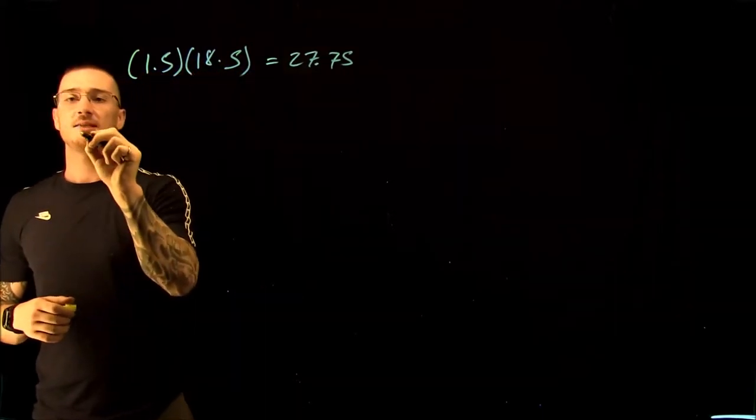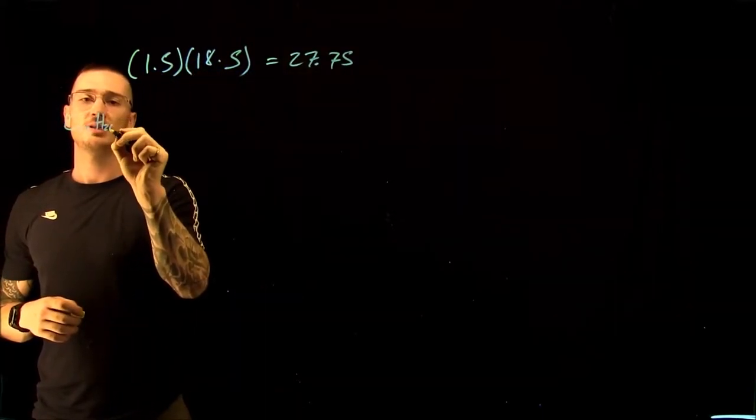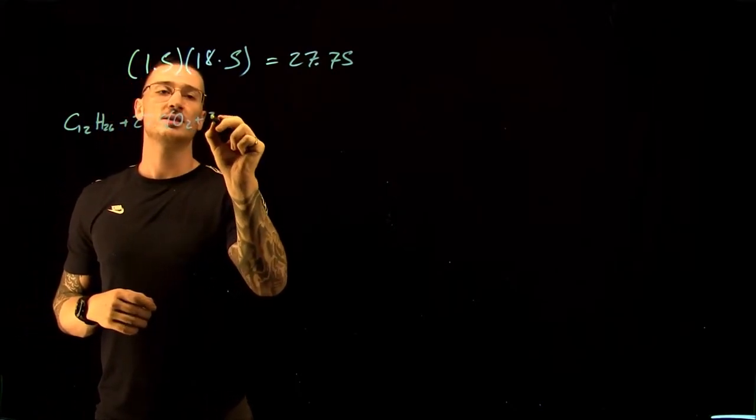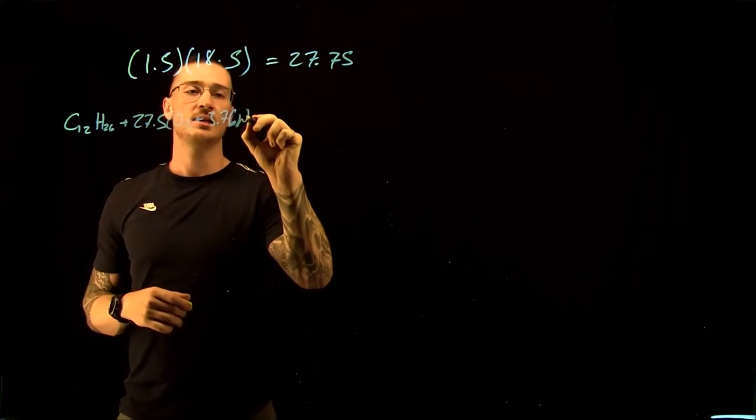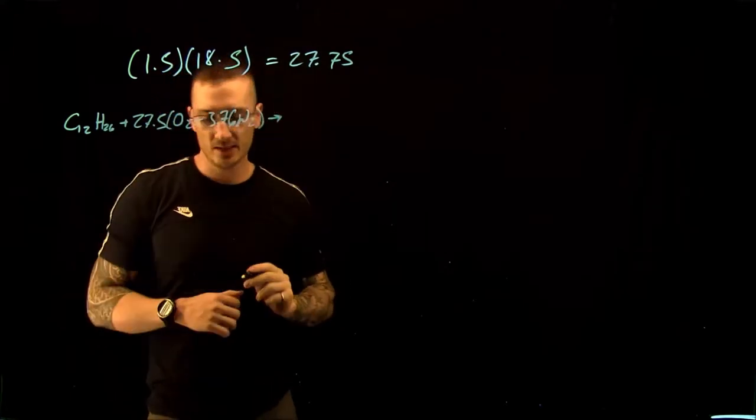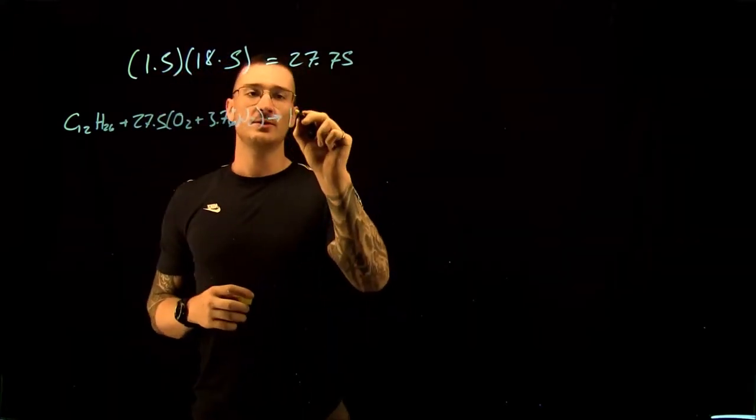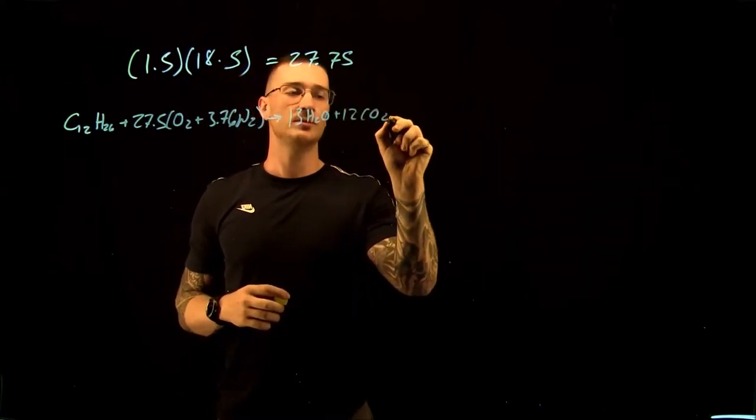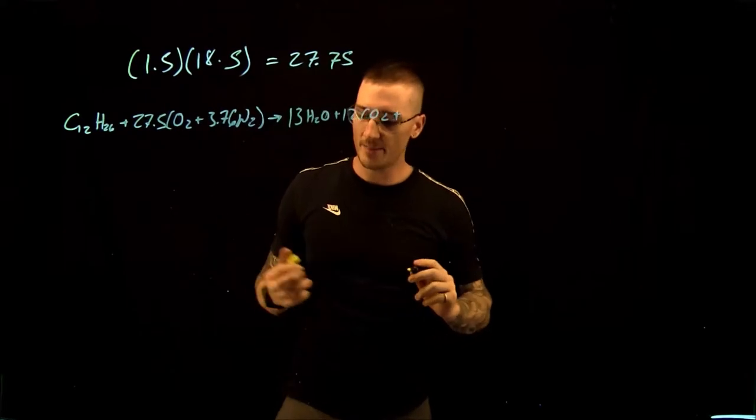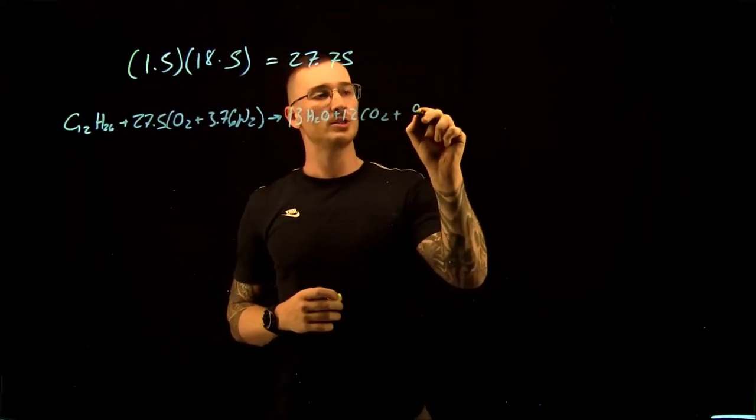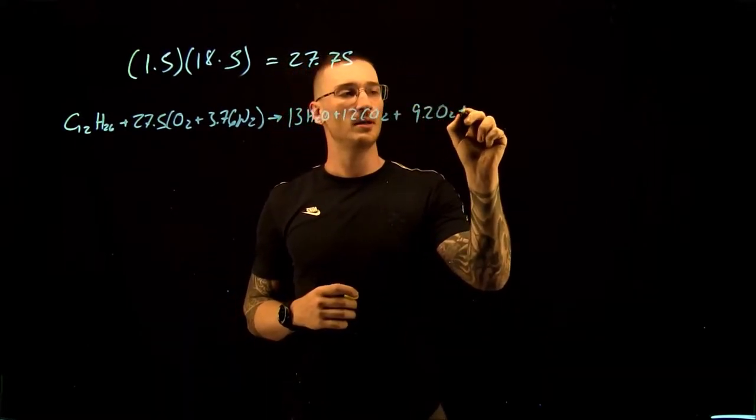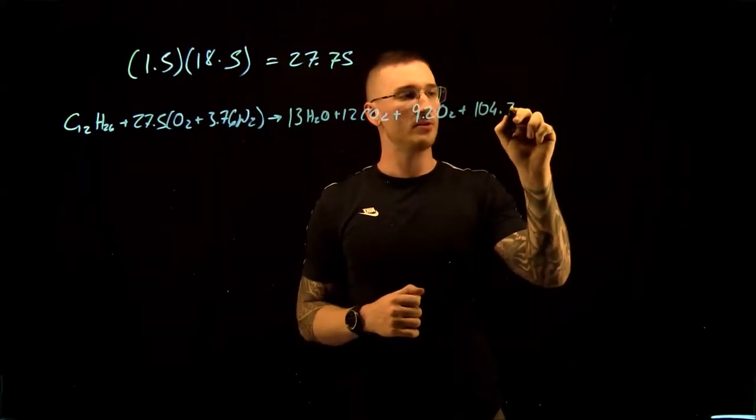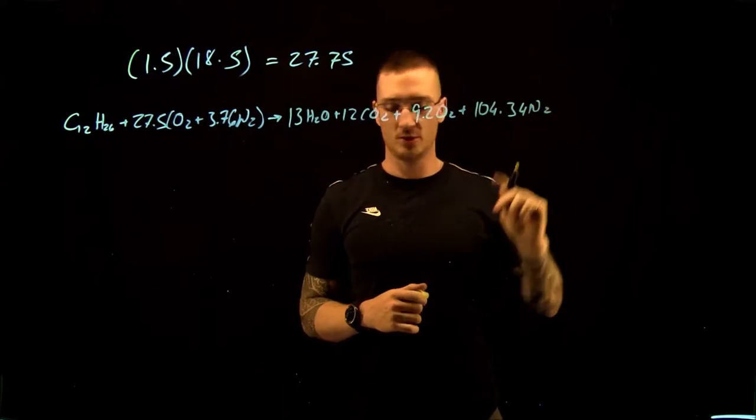So we have our C12H26 plus 27.75 O2 plus 3.76 N2. It's going to give us 13 H2O plus 12 CO2 plus some amount of excess air, which is 9.25 O2 plus 104.34 N2.